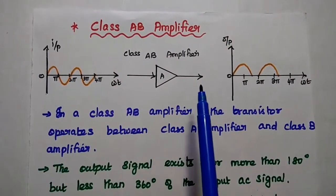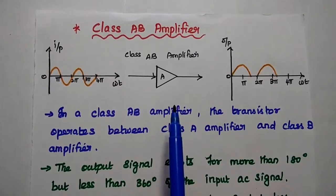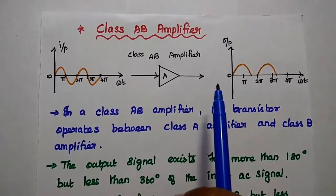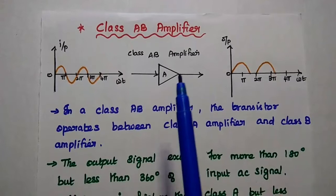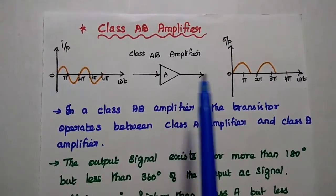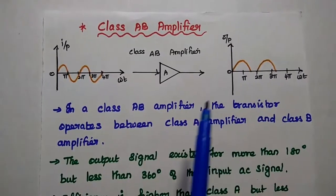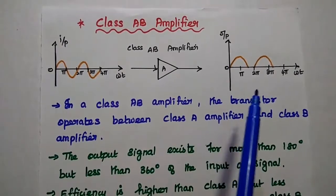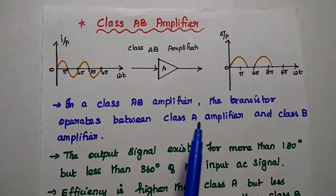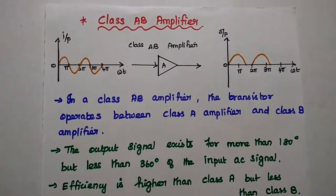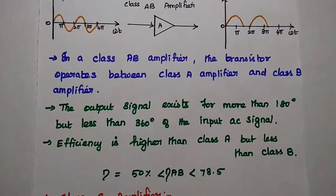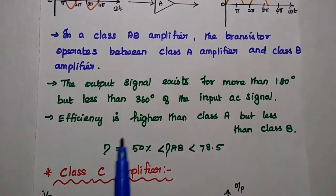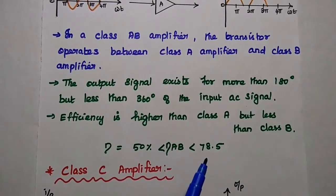Next is class AB amplifier. Class AB amplifier operates between class A and class B amplifiers, hence it is named class AB. Here the transistor is on for more than 180 degrees and less than 360 degrees, meaning the output signal exists for more than 180 degrees but less than 360 degrees of the input AC signal. The efficiency of class AB amplifier is higher than class A but less than class B, in the range of 50% to 78.5%.